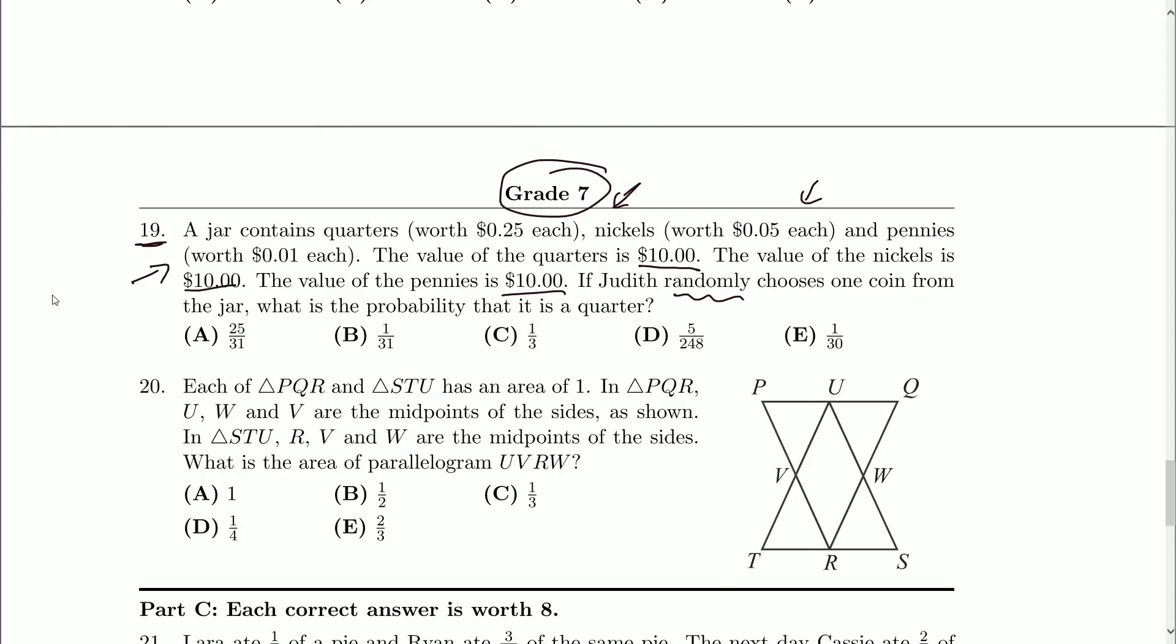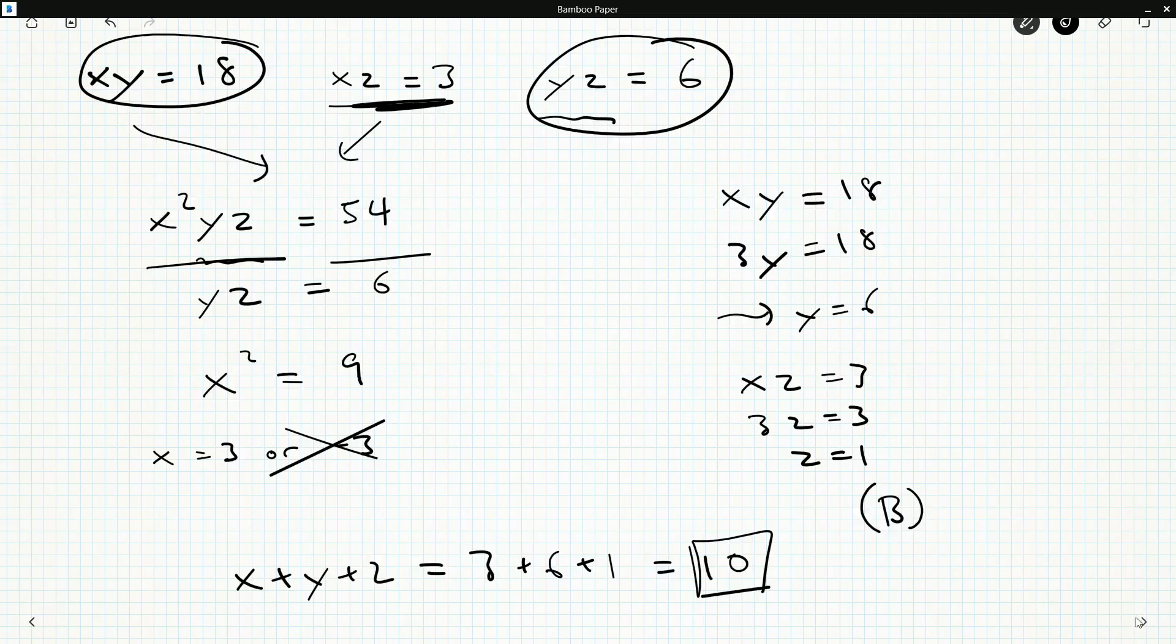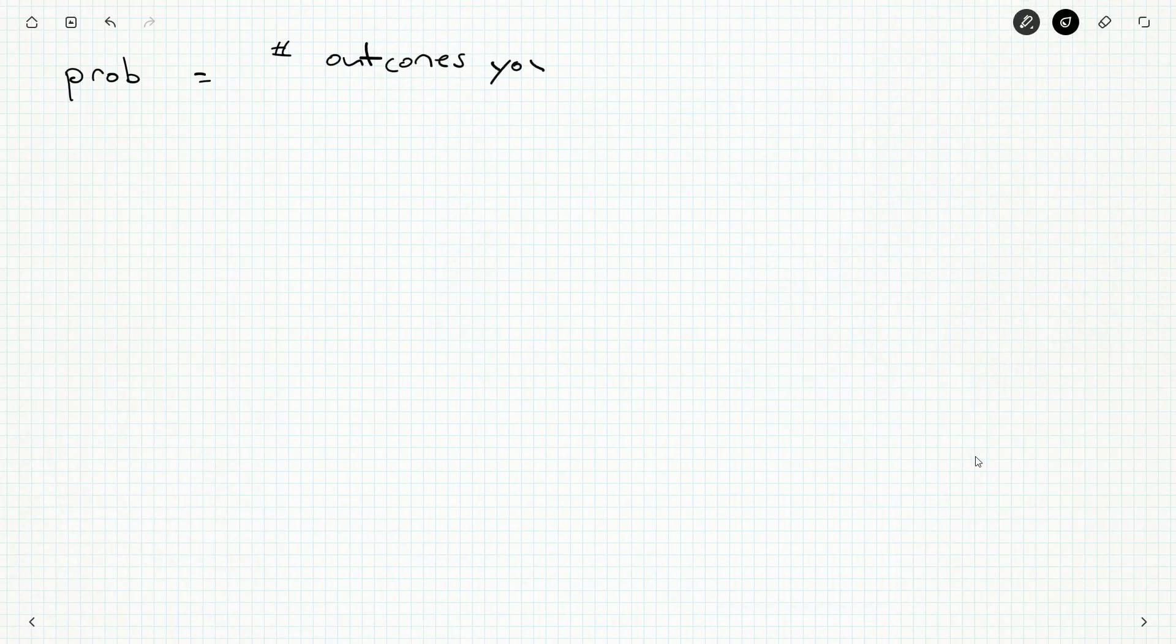And the basic idea for probability is, especially at this level, it can get a lot harder when you head to university, but the basic idea for probability on most of these contests is, the probability that you want is the number of outcomes you want divided by the total number of possible outcomes.